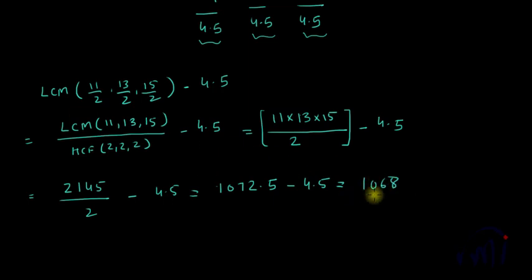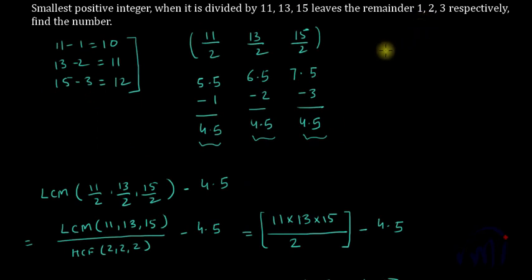So 1068 will be a number which when divided by 11 should give you 1 as remainder. Let's divide and check. 11 times 9 is 99, 16 minus 9 is 7, and if I note down this 8 it gives us 78. 11 times 7 is 77, and if I subtract I'll get 1 as remainder.